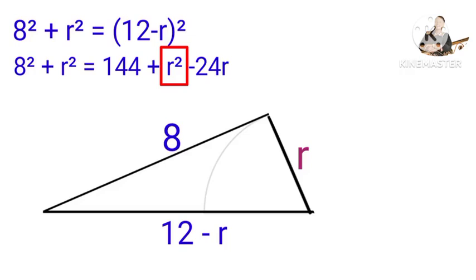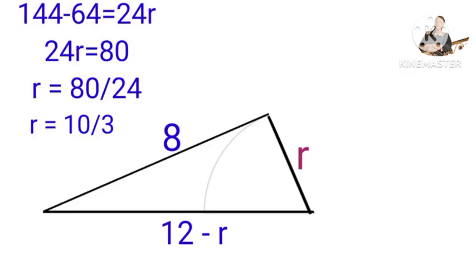Now when you move this R squared to this side of the equation, you are going to have R squared minus R squared, that will be 0. When we solve this equation, we arrive at 24R equals 80. R will be equal to 80 over 24, also equals to 10 over 3.